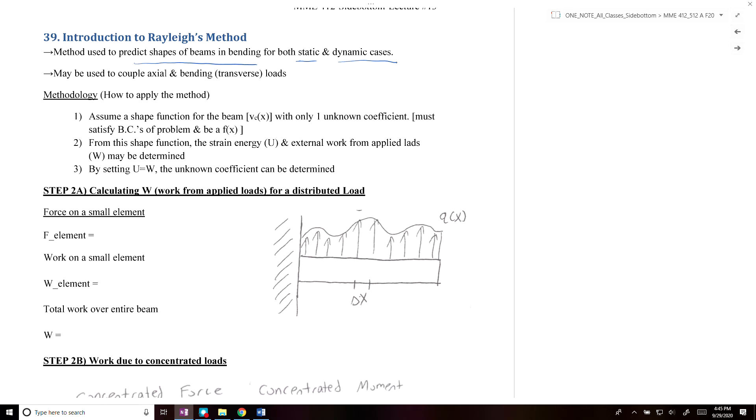In this method, the first thing you do is assume a shape function for the beam. Vc is a function of x with only one unknown coefficient. This must satisfy the boundary conditions of the problem and needs to be only a function of x. From this function, you can determine the strain energy U and the external work W from the applied loads. Then, by setting U equal to W, you can determine the unknown coefficient.